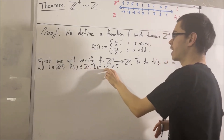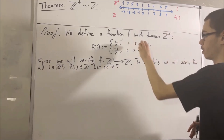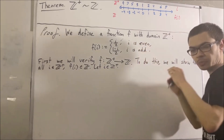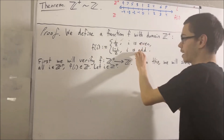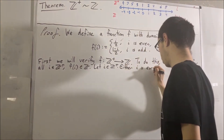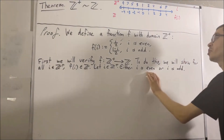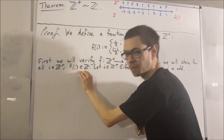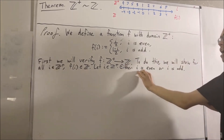When we take i and send it into the function f, either i is even or i is odd. So we're going to split this up into two cases: either i is even or i is odd. In either case, we're going to show that f of i is an integer. Let's start with case one, where i is even.